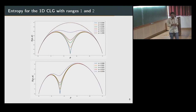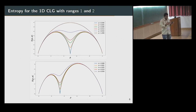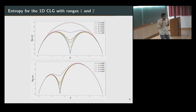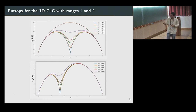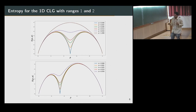You can also study this for related models with extended range. In the conserved lattice gas you only have activation when a particle is next to another particle, but you can have activation when a particle is within distance two of another particle, and then you will have a transition at density one-third. You will see a cusp develop there also. You can do this for all ranges — range four, range five, whatever — and you will see a cusp develop.